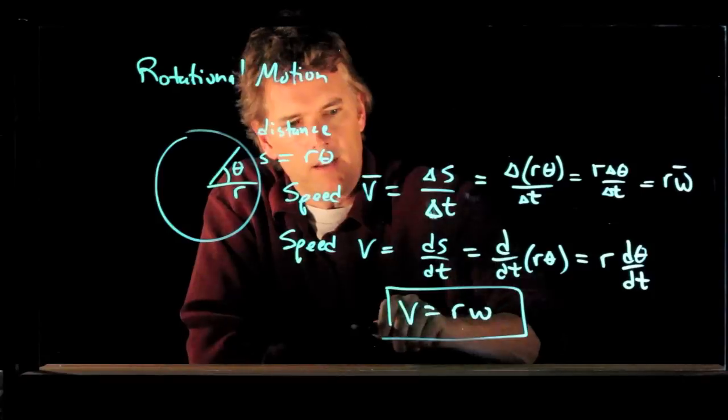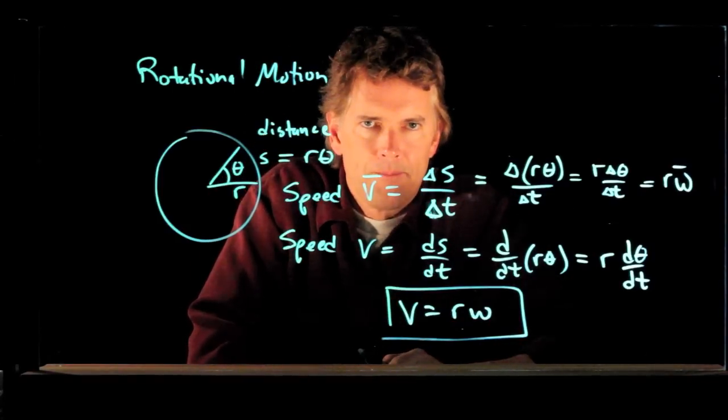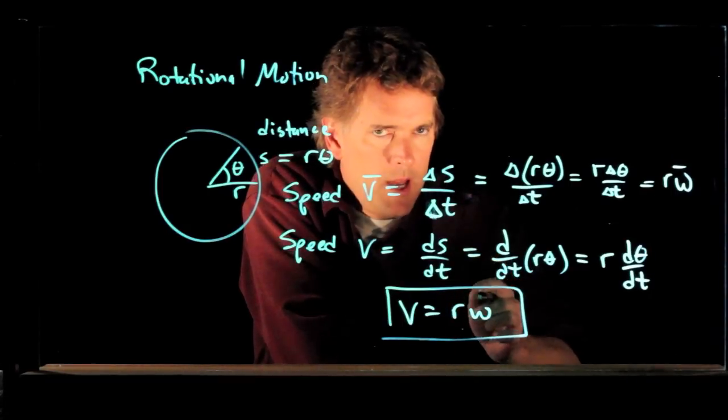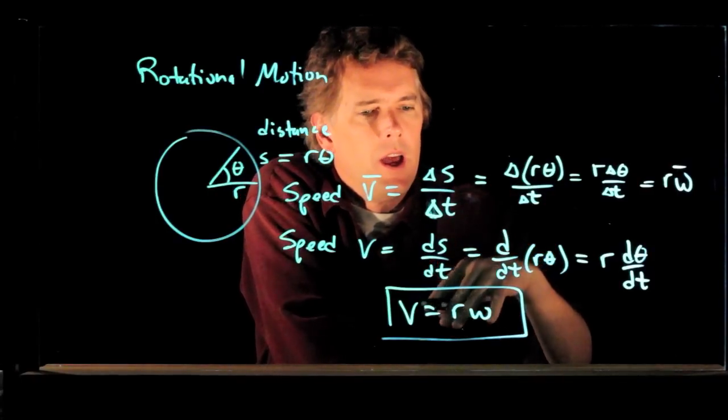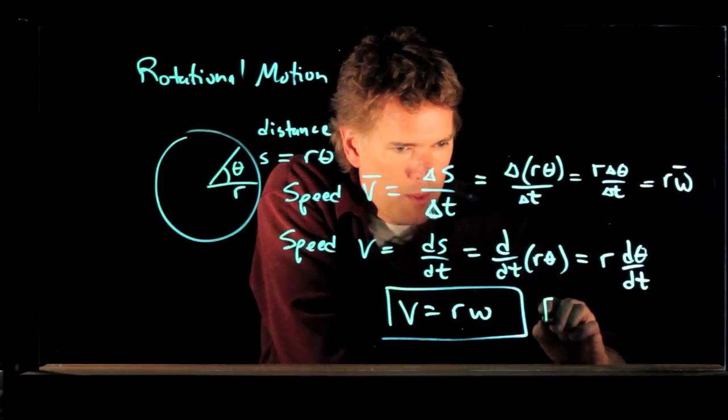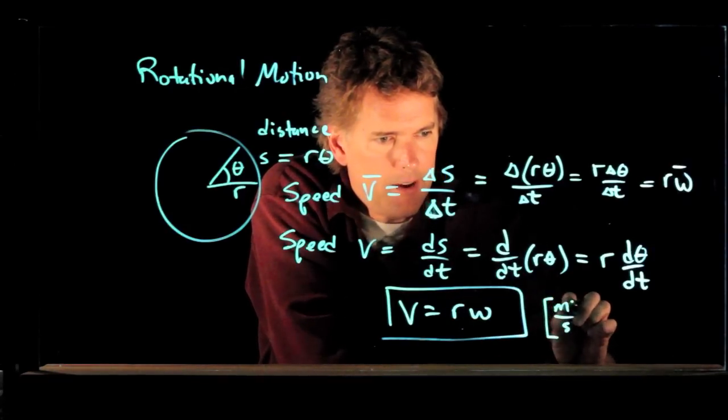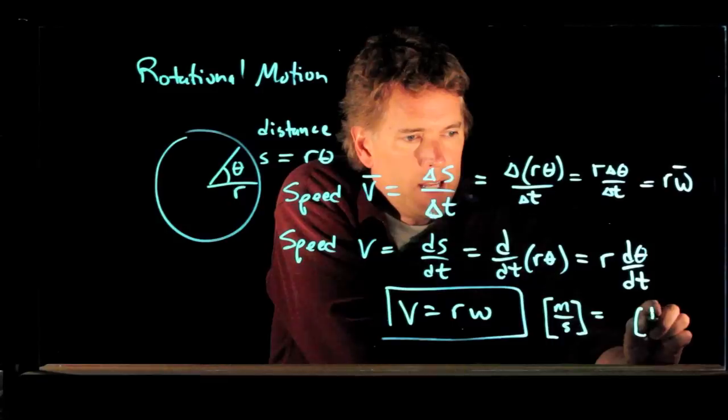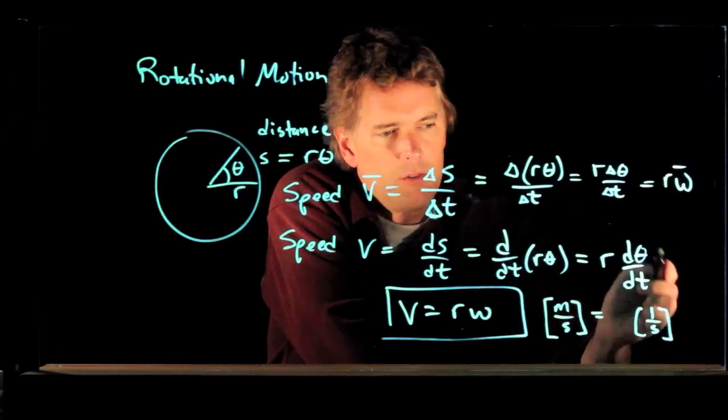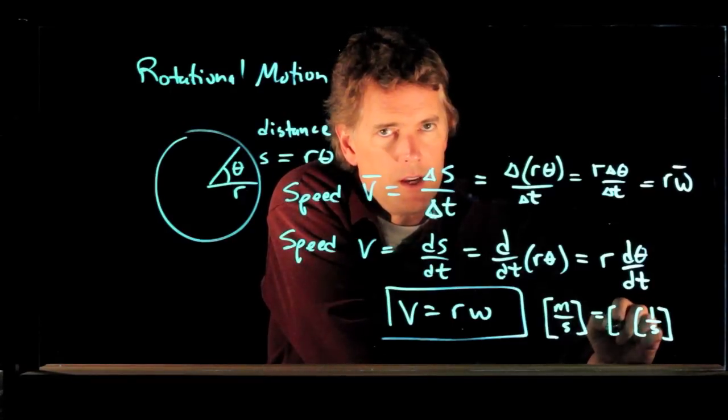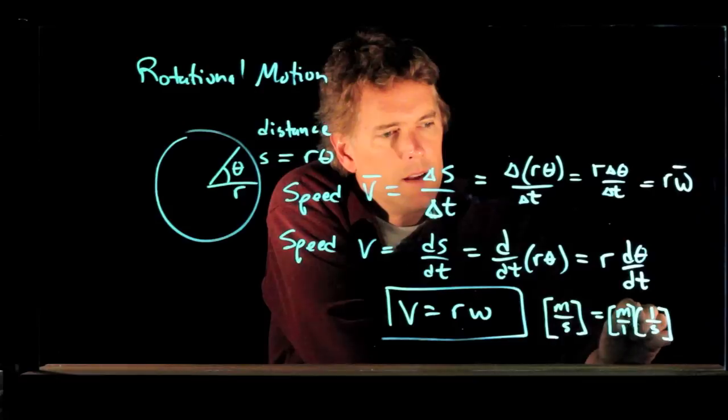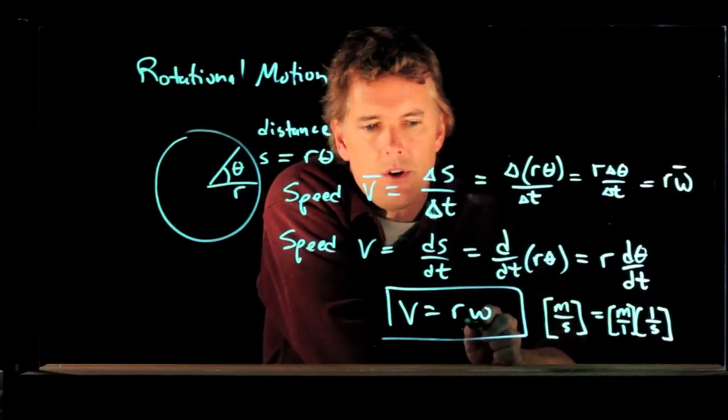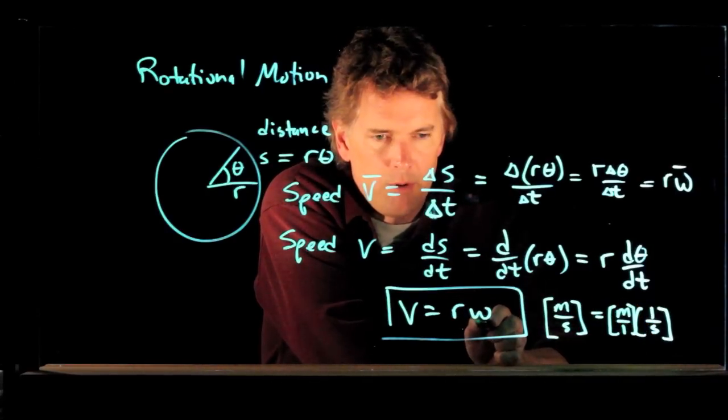In general, we can always write speed is equal to R times omega. Now, a lot of times people have trouble remembering this. How do I know it's omega times R, not omega divided by R? The way to understand that is just to look at the units. On the left side, we have V with units of meters per second. Omega is radians per second, but radians are unitless, so it's one over seconds. The only way to get R into here is if I multiply. So we end up with meters per second. That's how you can be sure that V equals R times omega is the correct formula.